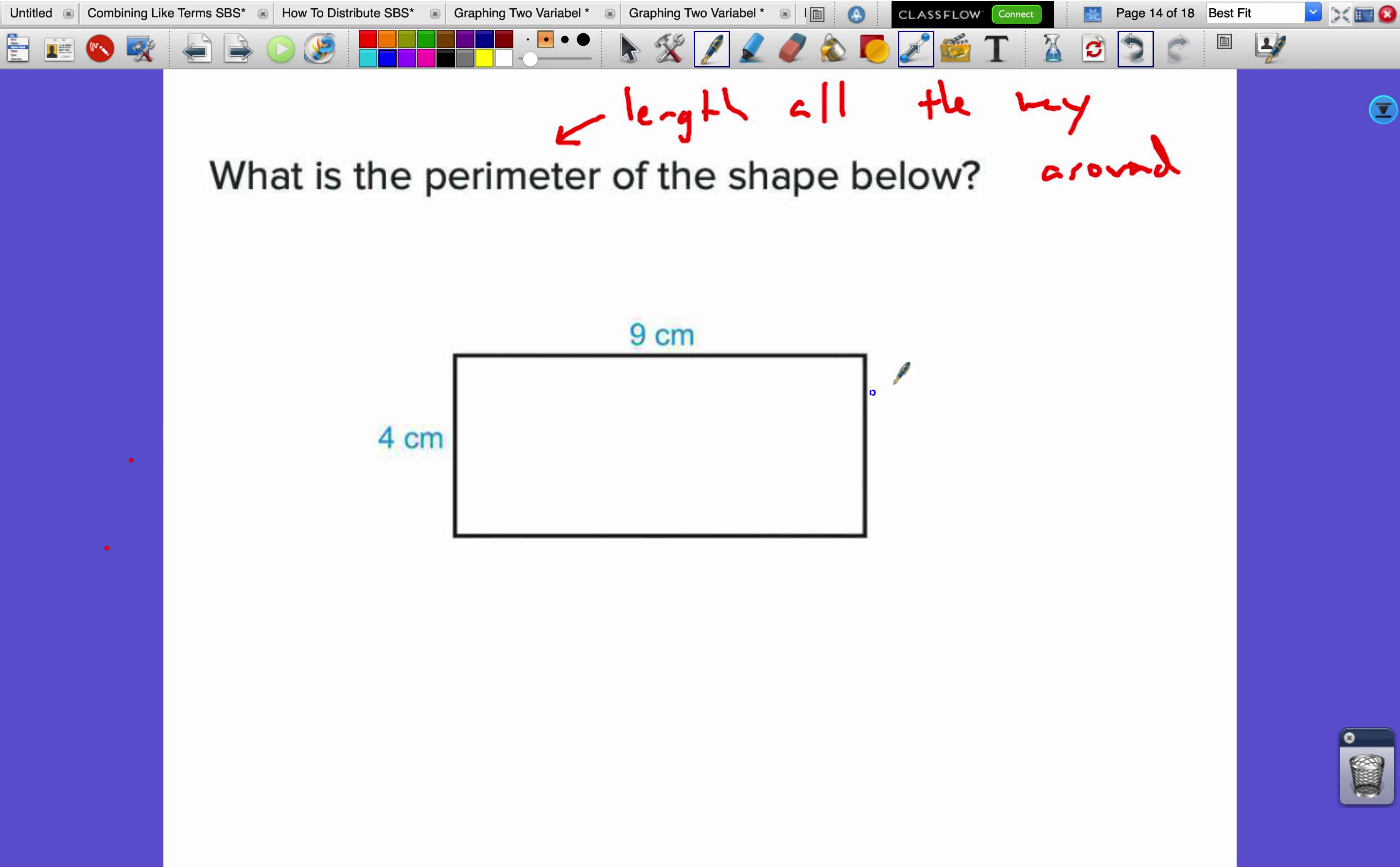Which means we need the length of every single line. But there's this thing about rectangles that's really helpful: if this side is 4 centimeters, then the opposite side is 4 centimeters. Opposite sides of a rectangle are the same length. So what would be this length down here? If the side up here is 9 centimeters, then this side is 9 centimeters.